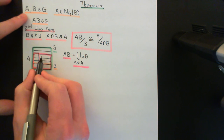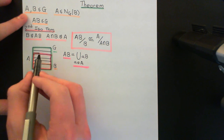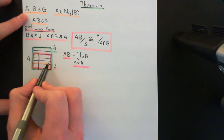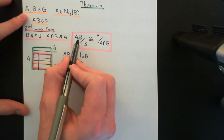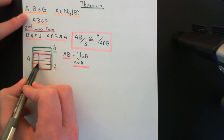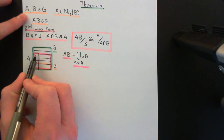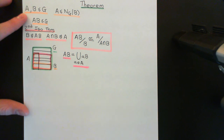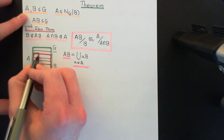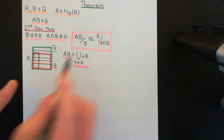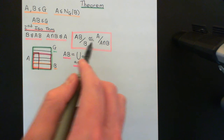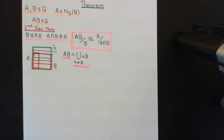B will be a normal subgroup in AB, which I'll show shortly. We can then quotient this product AB out by B, partitioning it into cosets which become the elements of the quotient group. The second isomorphism theorem states this is isomorphic to A quotiented out by A ∩ B, which we'll also need to prove is a normal subgroup of A. Looking at the picture, this is very believable — it's essentially these cosets clipped down to just the elements that are in A.